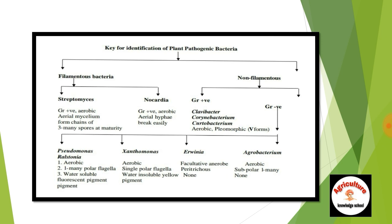The gram negative bacteria include Pseudomonas, Ralstonia, Xanthomonas, Erwinia, and Agrobacterium, as shown in the slide.